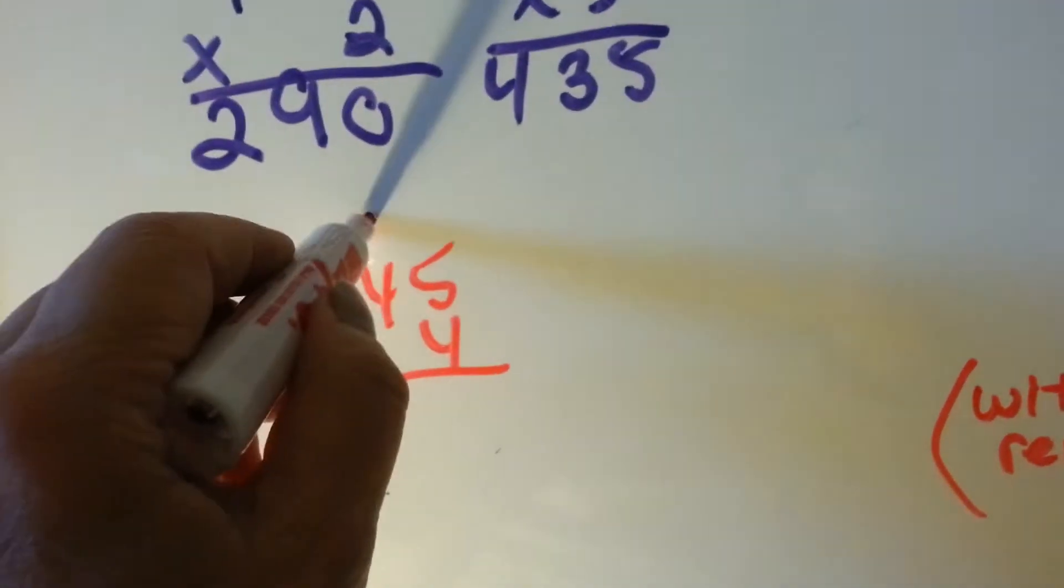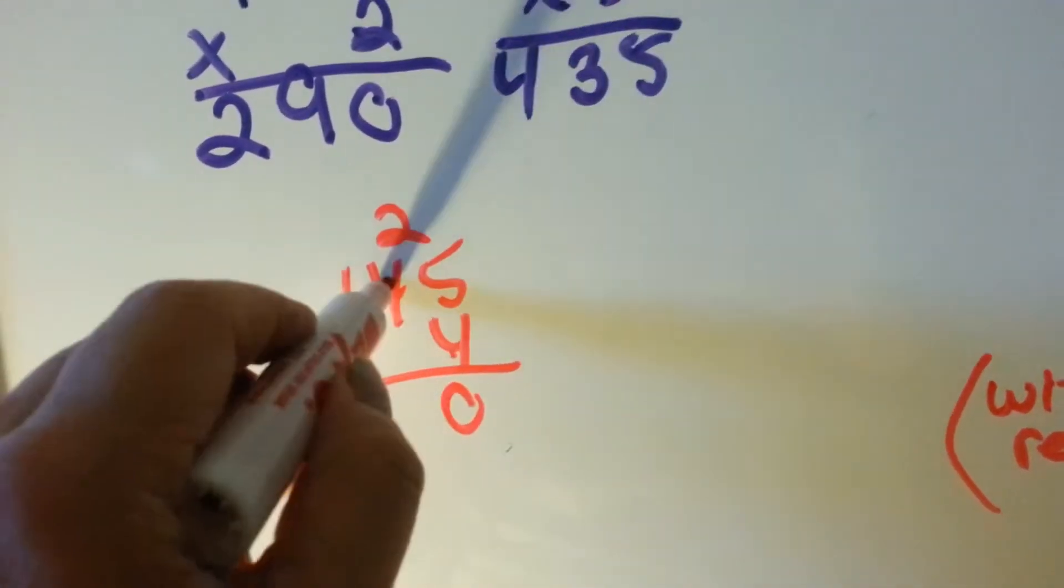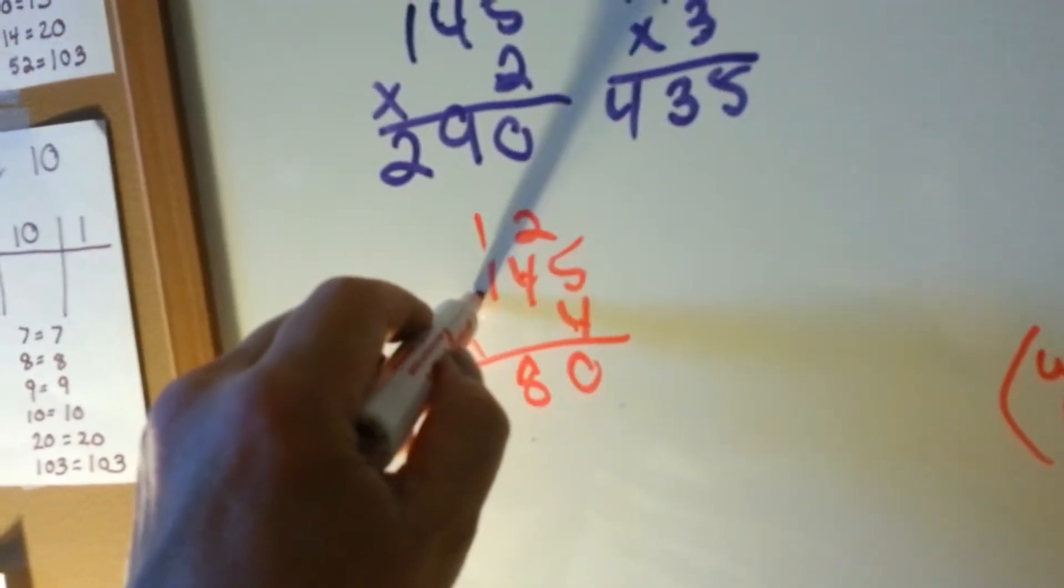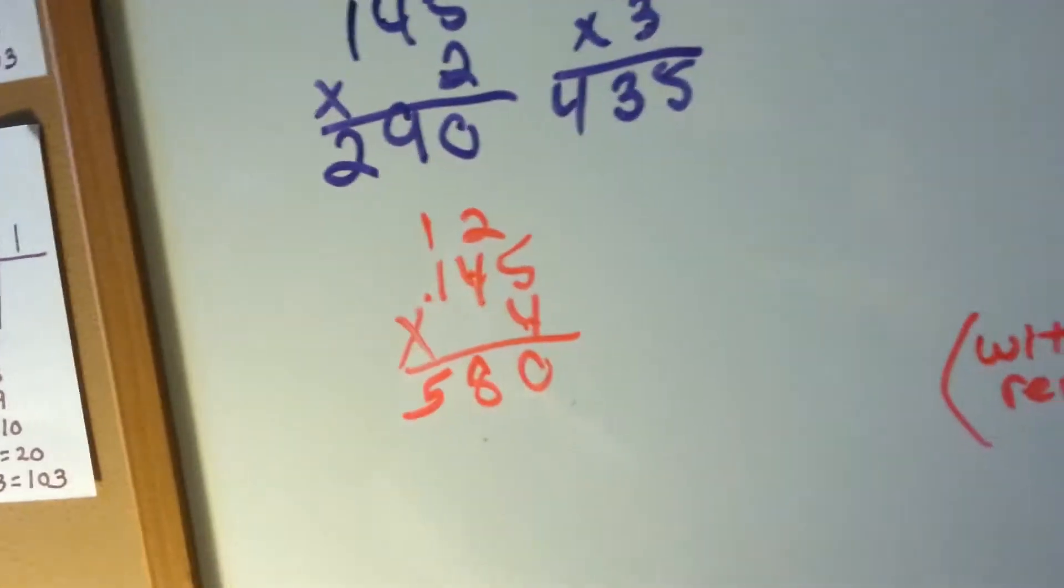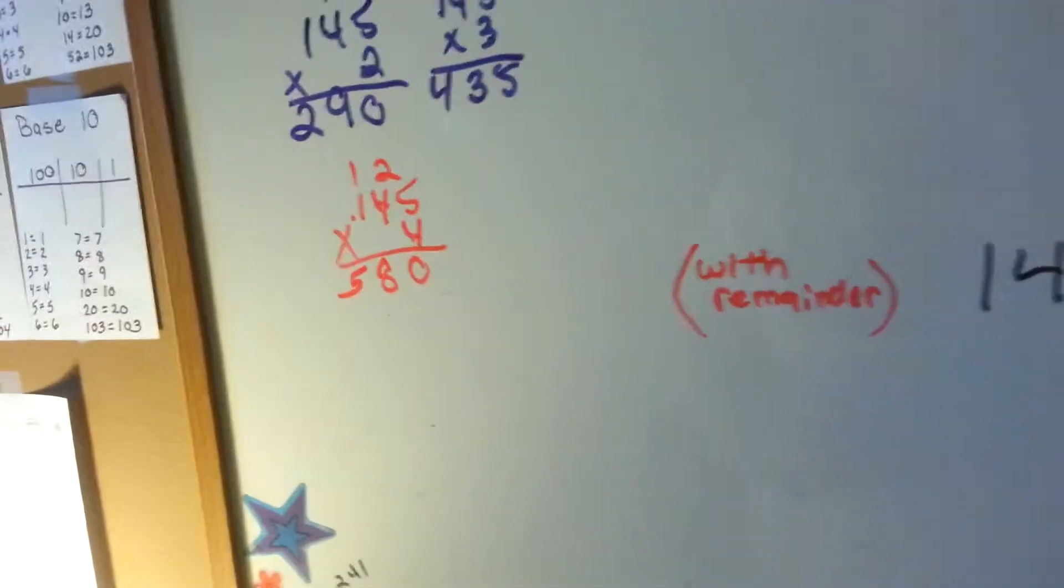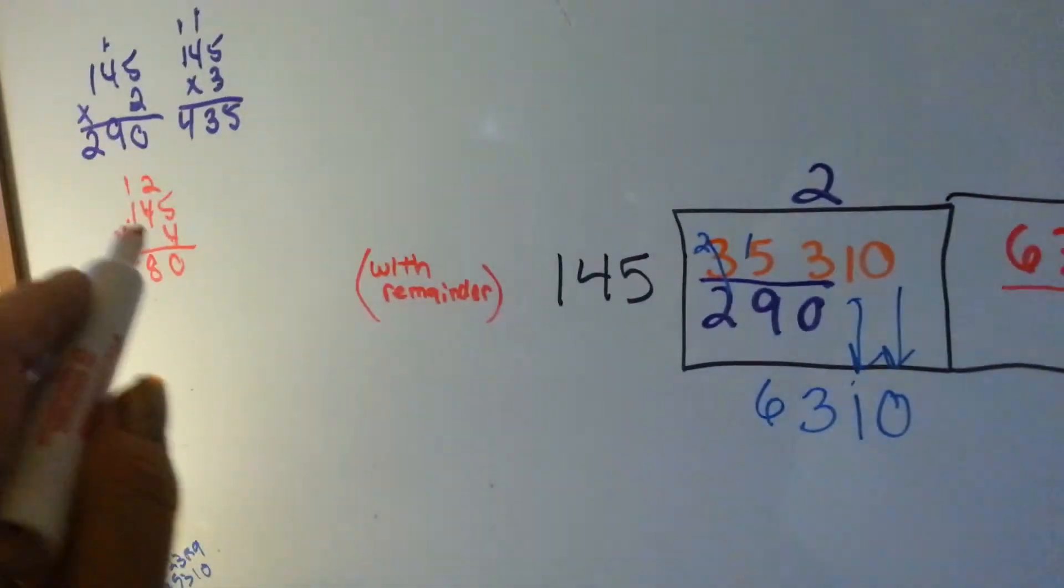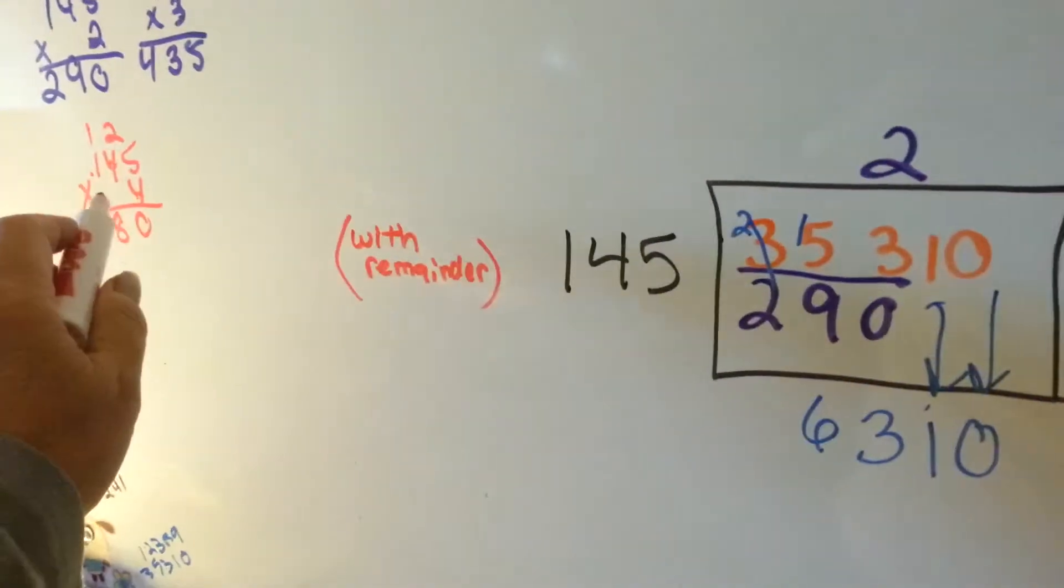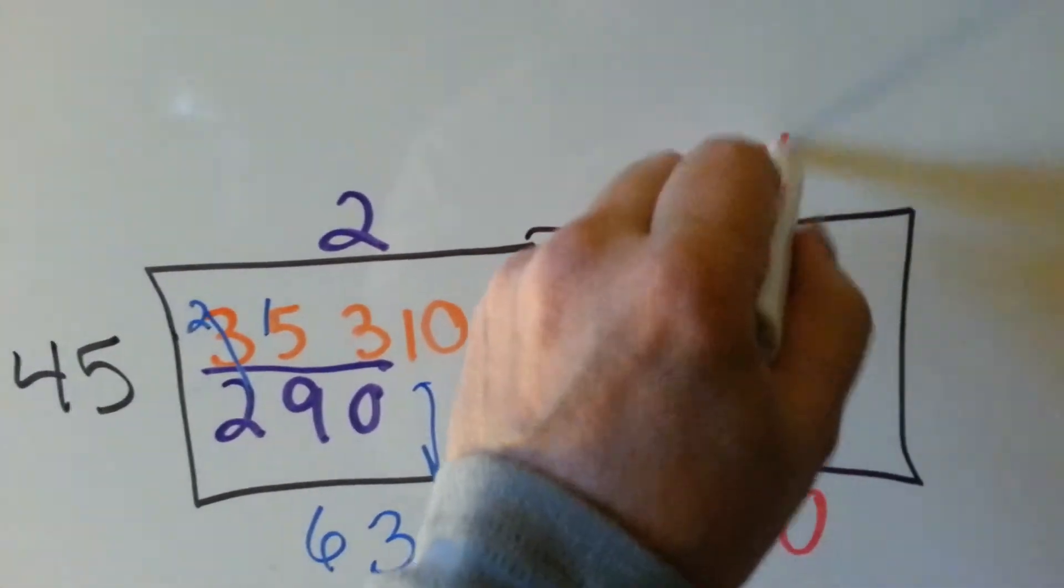145 times 4. 5 times 4 is 20. 4 times 4 is 16. 17, 18, 4, 5. Ooh, 580. 580 is close. And that's times 4, okay? So, we're going to put the 4 above the 1.